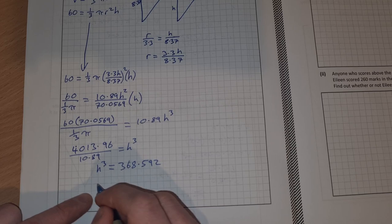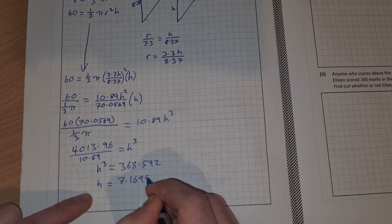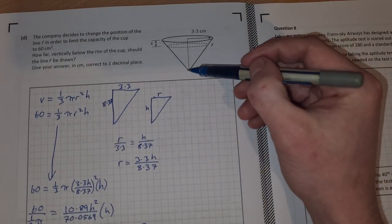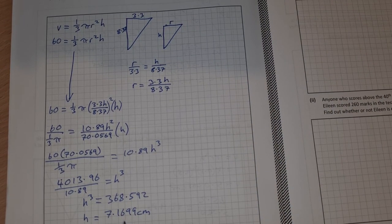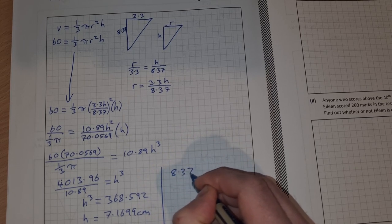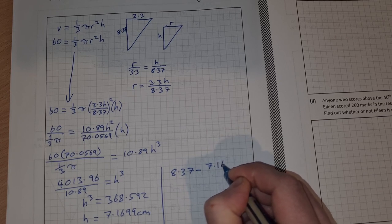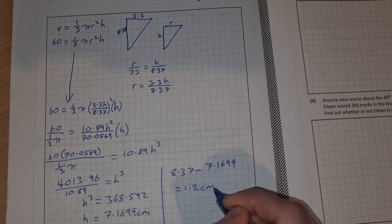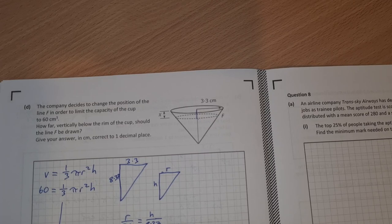The cubed root of that, h equals 7.1699 centimeters. That is the height here. We're looking for this distance x, so we just need to take that away from the height. Overall it's going to be 8.37 minus 7.1699, that's equal to 1.2 centimeters correct to one decimal place. So the height we come down is 1.2 centimeters.